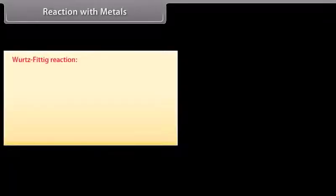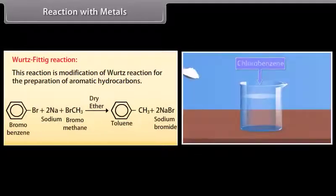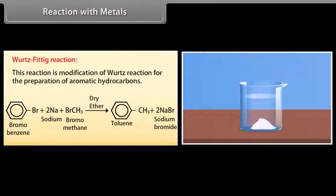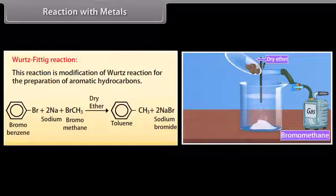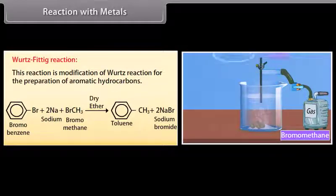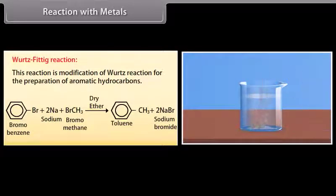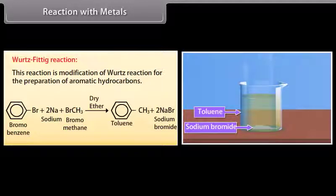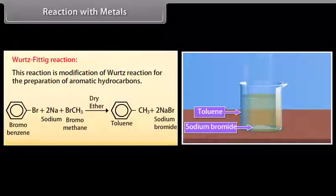Wurtz-Fittig reaction. This reaction is a modification of Wurtz reaction for the preparation of aromatic hydrocarbons. In a solution of bromobenzene, add some sodium, bromomethane in the presence of dry ether which reacts to give toluene and sodium bromide.